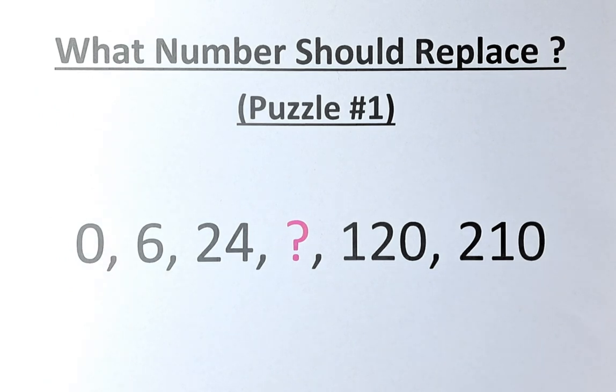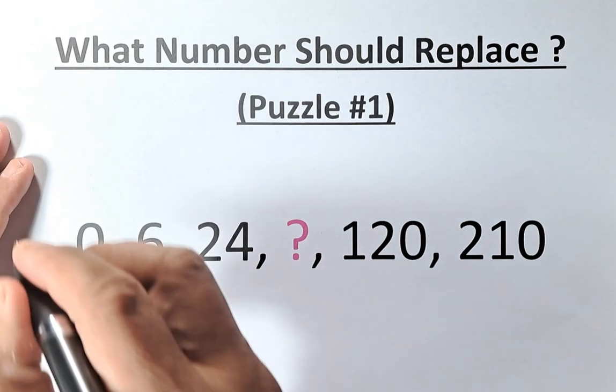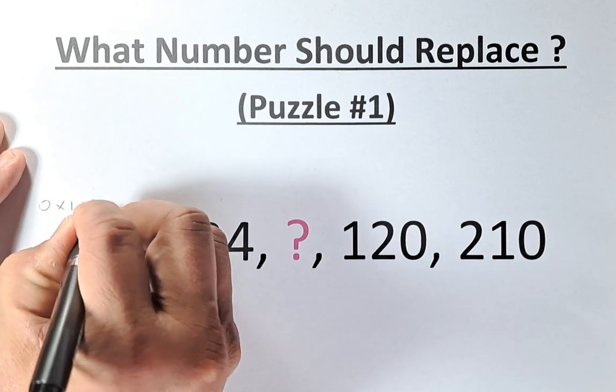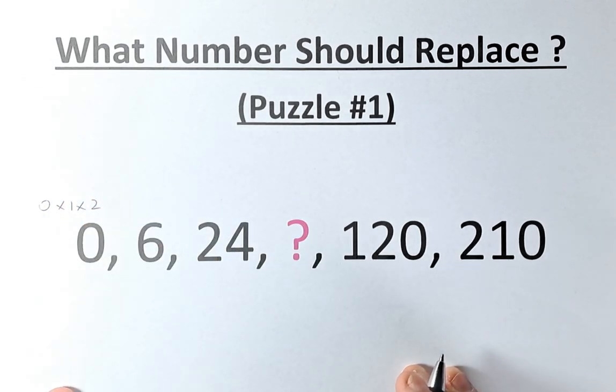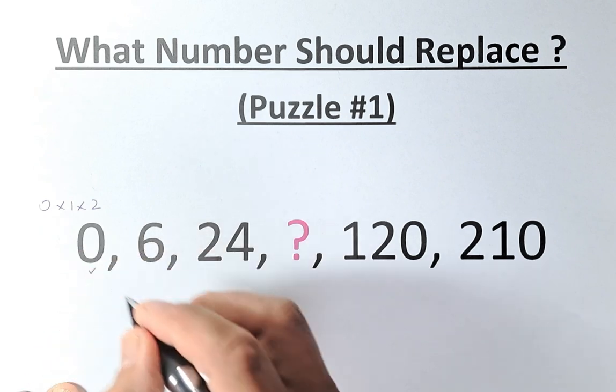So 0, 6, 24, 120, 210, and a question mark, they are all even numbers. To find the first number, which is 0, it's quite straightforward. We're going to take 0 multiplied by 1 multiplied by 2. So 0 times 1 times 2, that will give us 0.